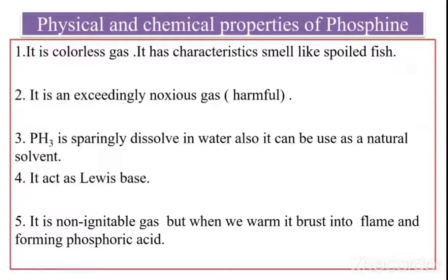Physical and chemical properties of phosphine: Number one, it is a colorless gas and it has a characteristic smell like spoiled fish. Number two, it is an exceedingly noxious gas — that means it is harmful. PH3 is sparingly dissolved in water, and it can also be used as a neutral solvent. In some reactions, phosphine is used as a neutral solvent.